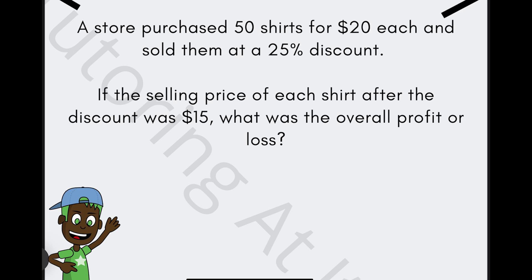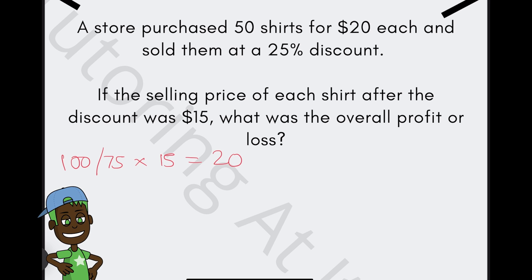If the selling price of each shirt after the discount was $15, what was the overall profit or loss? So let's assume the cost price of the shirt is $20, and the selling price after a 25% discount is going to be $15. So if we talk about the selling price before the discount, that would be 100 divided by 75 times by 15, and that should give us $20.